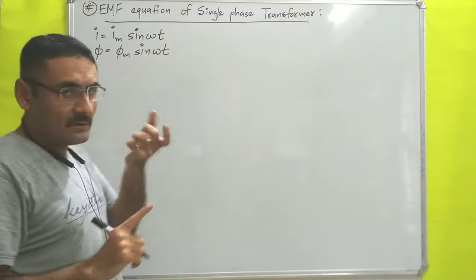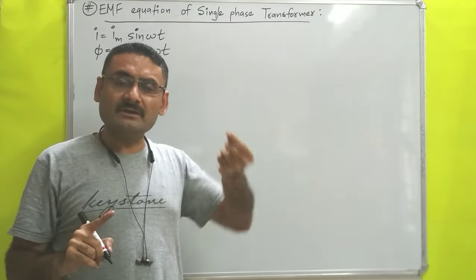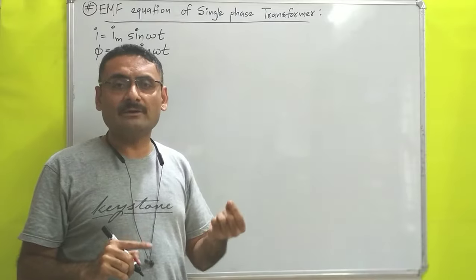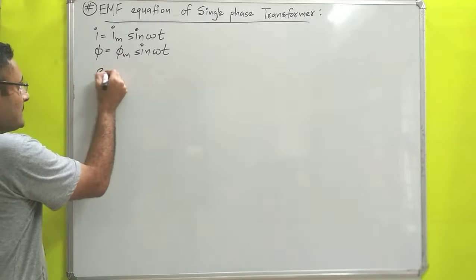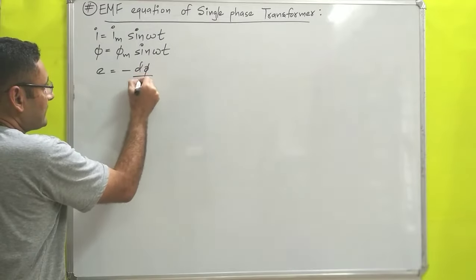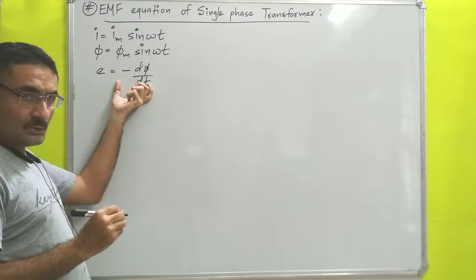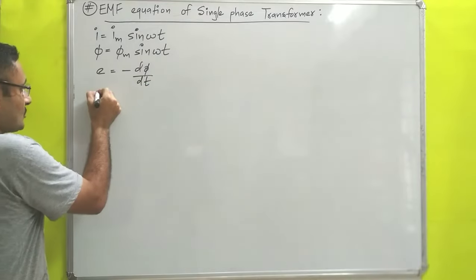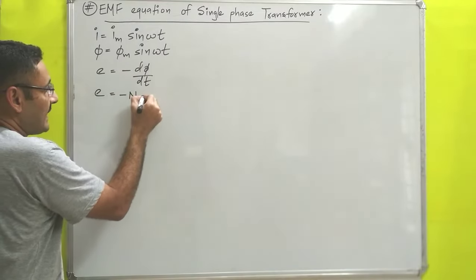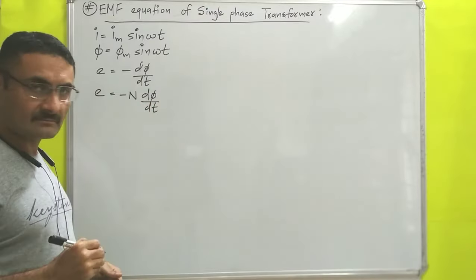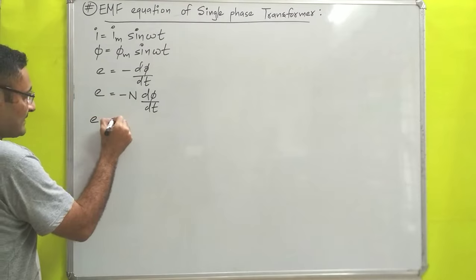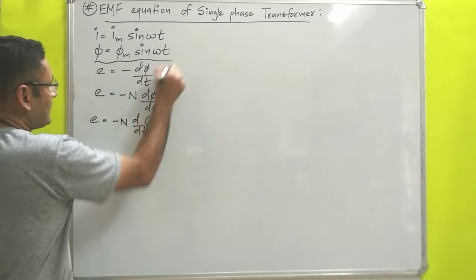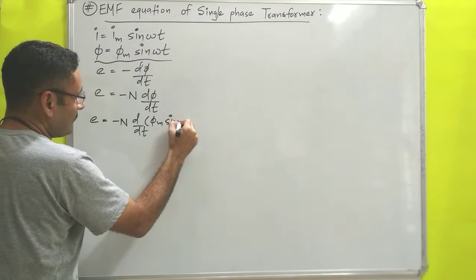Due to this changing flux, an EMF is induced in the secondary coil according to Faraday's second law: E = -dφ/dt. Since there are N number of turns in the coil, we write E = -N dφ/dt. The same thing can be written as E = -N d/dt of φ, where φ = φm sin(ωt).